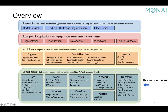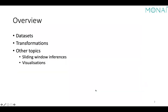In this section, we are going to focus at the basic component level. I will highlight some components and detailed usages for datasets, caching, and pre-processing and post-processing transforms. In the notebook, I will also cover sliding window inference and a bit about visualizations.